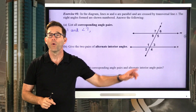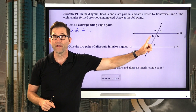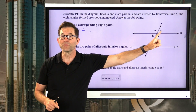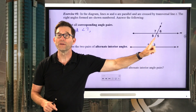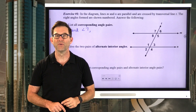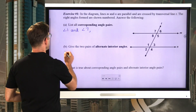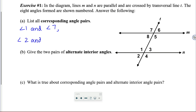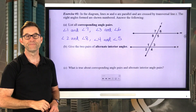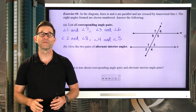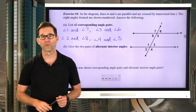The other three corresponding pairs are: angle two and angle eight, angle three and angle six, and angle four and angle five. So those are the four corresponding angle pairs — angles that show up in the same relative positions on the two lines that are cut by the transversal.